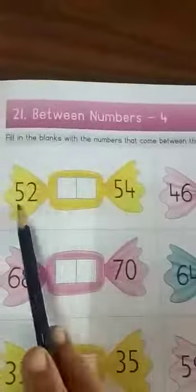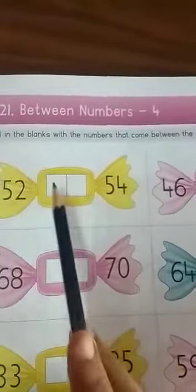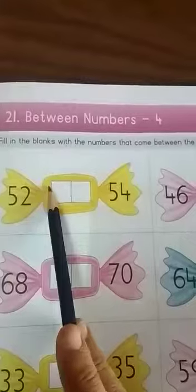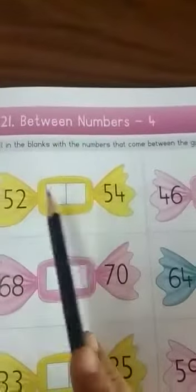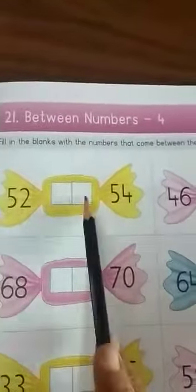See children here, two numbers are given and in between these two numbers space is given. So we have to write the number which comes between both of these numbers. So let's start.